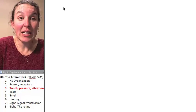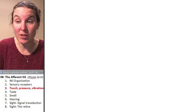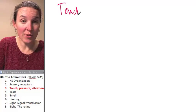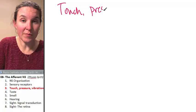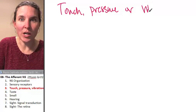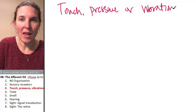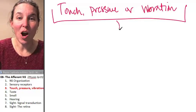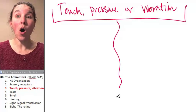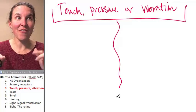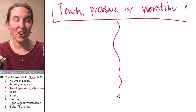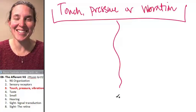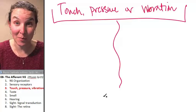We're going to start by talking about the kinds of sensory receptors that pick up sensations of touch, pressure, or vibration. All of those sensations are felt, are received, are delivered to the central nervous system by the same kind of receptor.